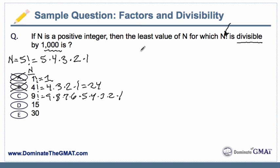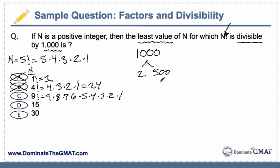So what do we do instead? The key on these types of questions — these least value types of questions, whether it's a least common multiple or greatest common factor — always rests in finding the prime factorization. Let's go ahead and do the prime factorization of 1,000. Well, it's 2 times 500. What we're doing is breaking this number of 1,000 into its component parts, its building blocks, its prime factors.